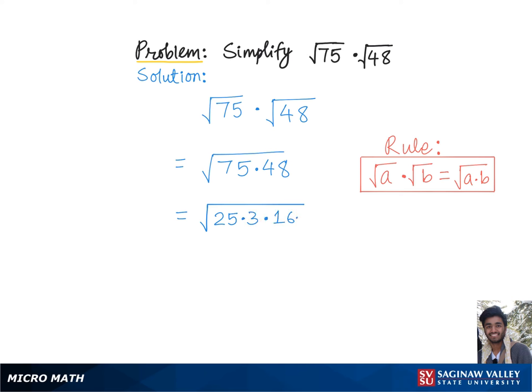This is equal to square root of 25, which can be rewritten as 5 squared, 3 times 3 is 3 squared, and 16 is 4 squared.